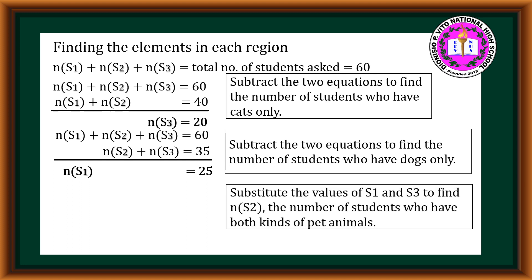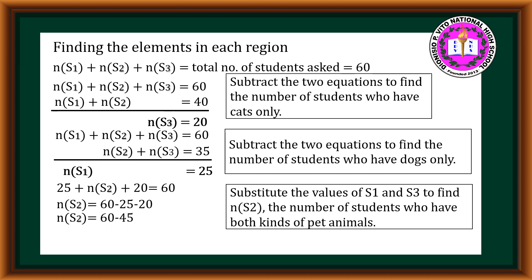Then we substitute the values of S₁ and S₃ to find S₂, the number of students who have both kinds of pet animals. So we have 25 (students with dogs only) + S₂ (students with both pets) + 20 (students with cats only) = 60 (total students). Therefore, S₂ = 60 − 25 − 20 = 60 − 45 = 15. The number of students who have both kinds of pet animals is 15.